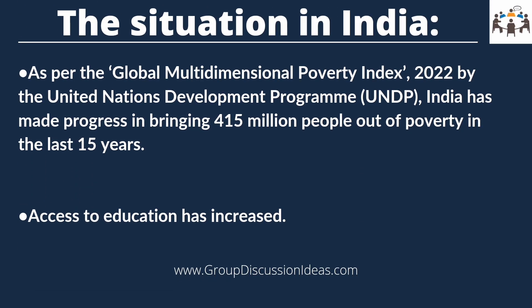Now let us understand the situation in India. As per the Global Multidimensional Poverty Index 2022 by the United Nations Development Programme, India has made progress in bringing 415 million people out of poverty in the last 15 years. Access to education has increased with the help of large investment from the government to provide free and compulsory education for children through the Right to Education Act and Sarva Shiksha Abhiyan.